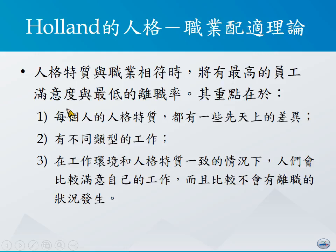为什么会像这样子呢？首先，每个人的人格特质会有先天上的差异；其次，世界上存在着各种不同类型的工作，而这些工作都会需要人们展现出来不大一样的行为特征。也因此，当工作的环境和人格特质较为一致的行为之下，人们较容易会满意自己的一份工作，因此比较不会有离职的状况发生。